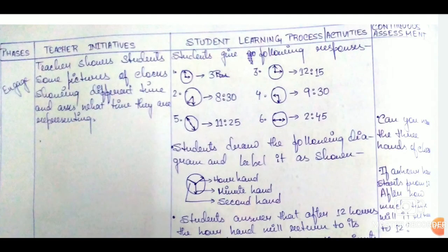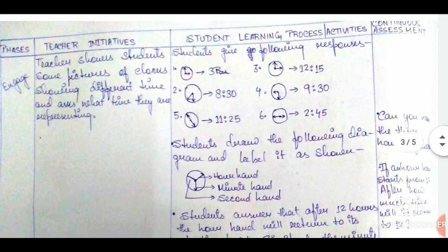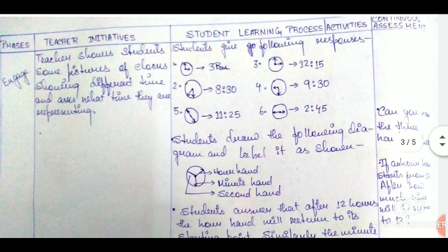Then we draw our table. This is the five E lesson plan, so there are five E's or five phases: engage, explore, explain, extend, and evaluate.